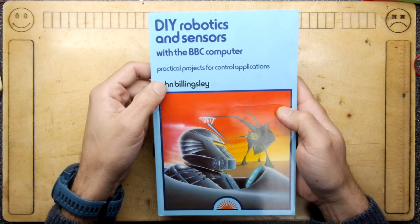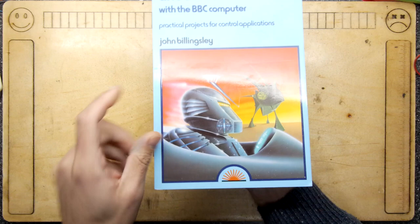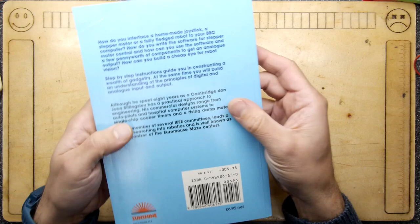This is DIY Robotics and Sensors with the BBC Micro Computer: Practical Projects for Control Applications by John Billingsley. Look at that lowercase j, lowercase b, very futuristic. The artwork on the front is a bit interesting because the robot does look a little bit like K-9 from Doctor Who, but it's trying to do some futuristic stuff there.